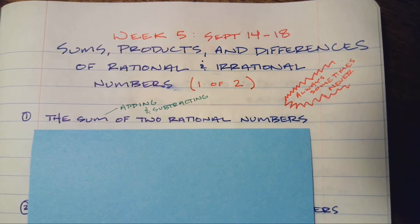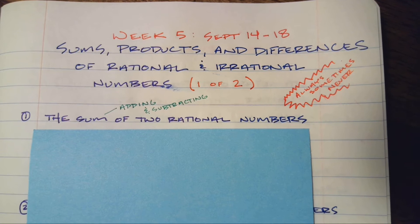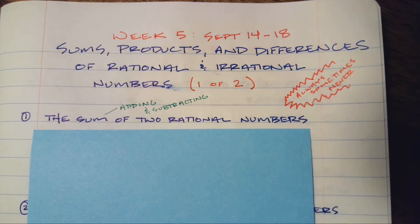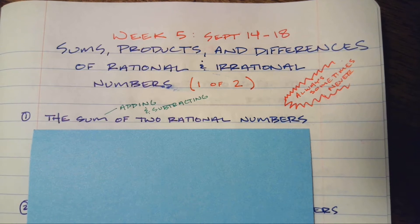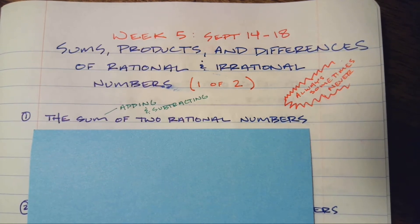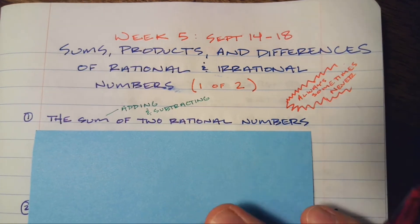Welcome back, scholars. My name is Mr. Byers. Today we're going to talk a little bit about something we touched on at the beginning of the year: rational and irrational numbers, and what happens when we add, subtract, and multiply them together. Let's just dive right in.